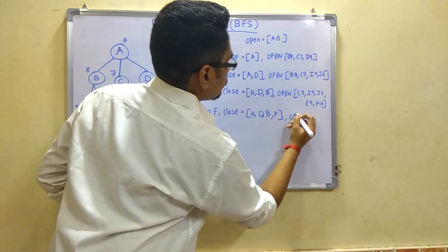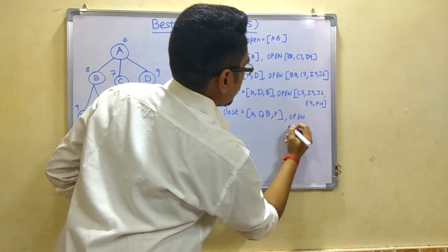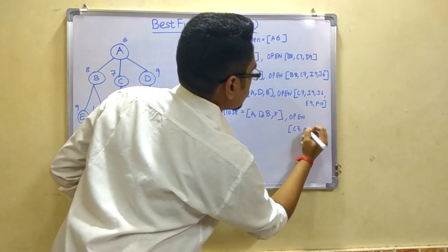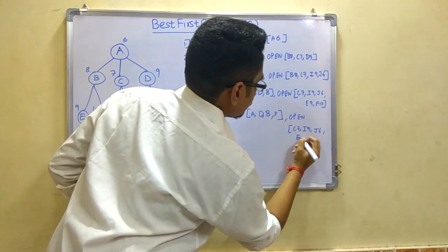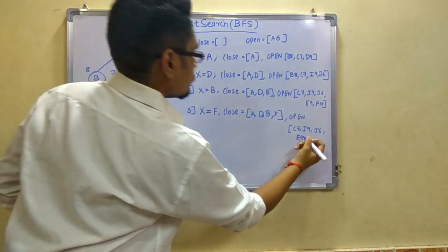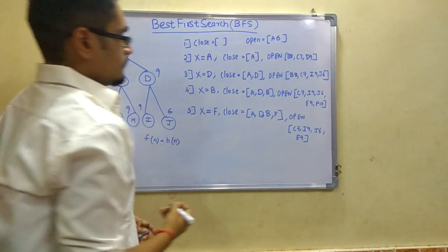We have set of open nodes as C7, I9, J6, E9. That's it. We have reached the goal node F.